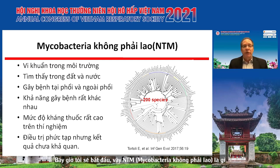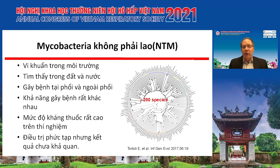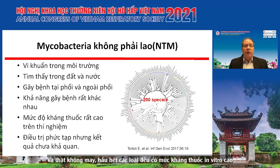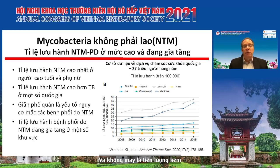What are non-tuberculous mycobacteria, or NTM? These are mycobacteria that are environmental — found in soil and water. They produce both pulmonary and extrapulmonary disease, although pulmonary is the most common. The pathogenicity among these 200 species is quite varied, and unfortunately most species have high levels of in vitro resistance, which makes treatment complex and unfortunately associated with poor outcomes.